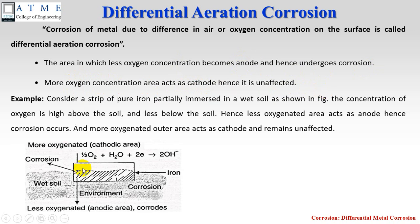For example, you can see in the picture where a pure metallic iron strip is half immersed inside soil. The same metal is thus exposed to two different oxygen concentrations — one inside the soil, another outside the soil. The metallic surface inside the soil has less oxygen concentration, so it acts as anode. Thus the metal undergoes oxidation and will be corroded due to less oxygen concentration.